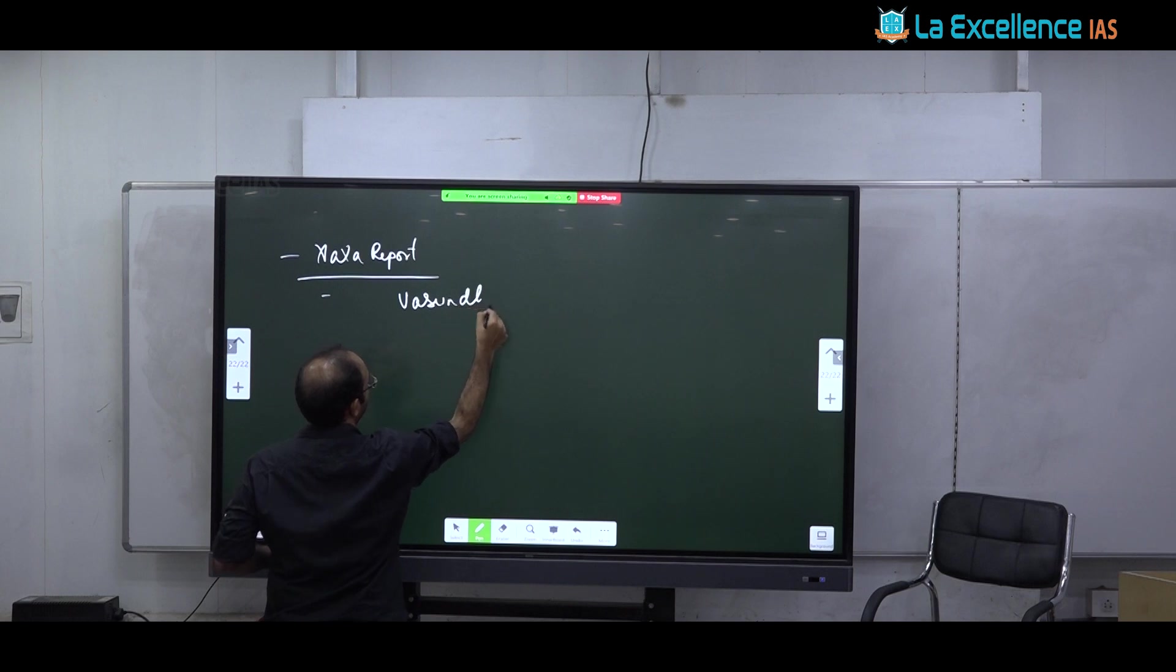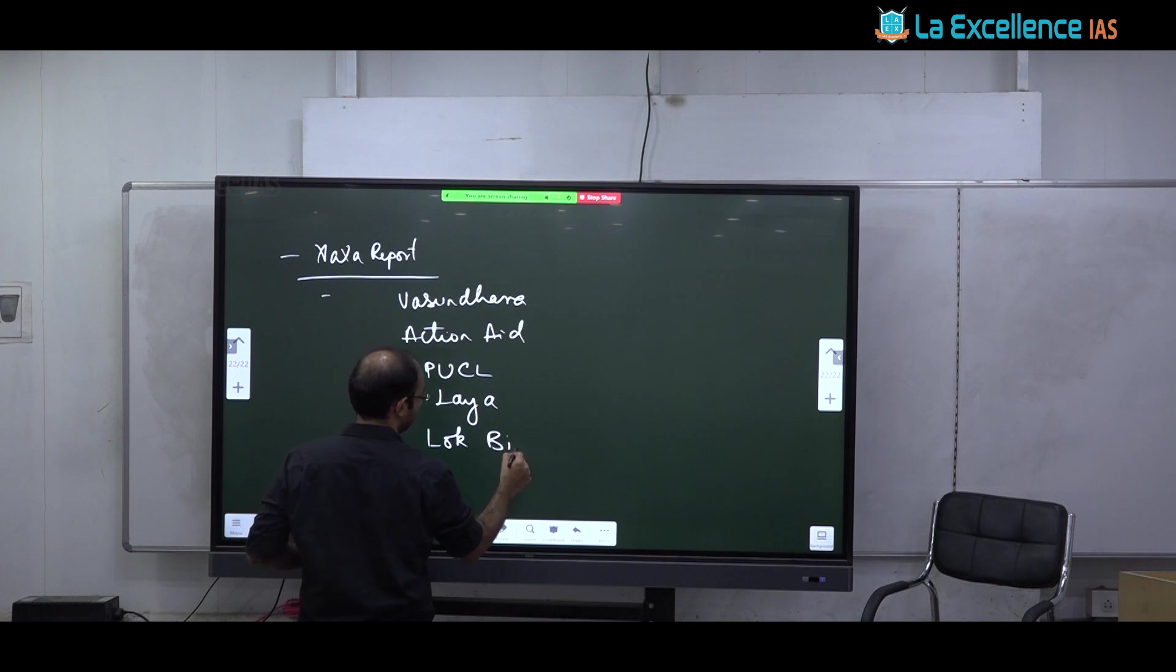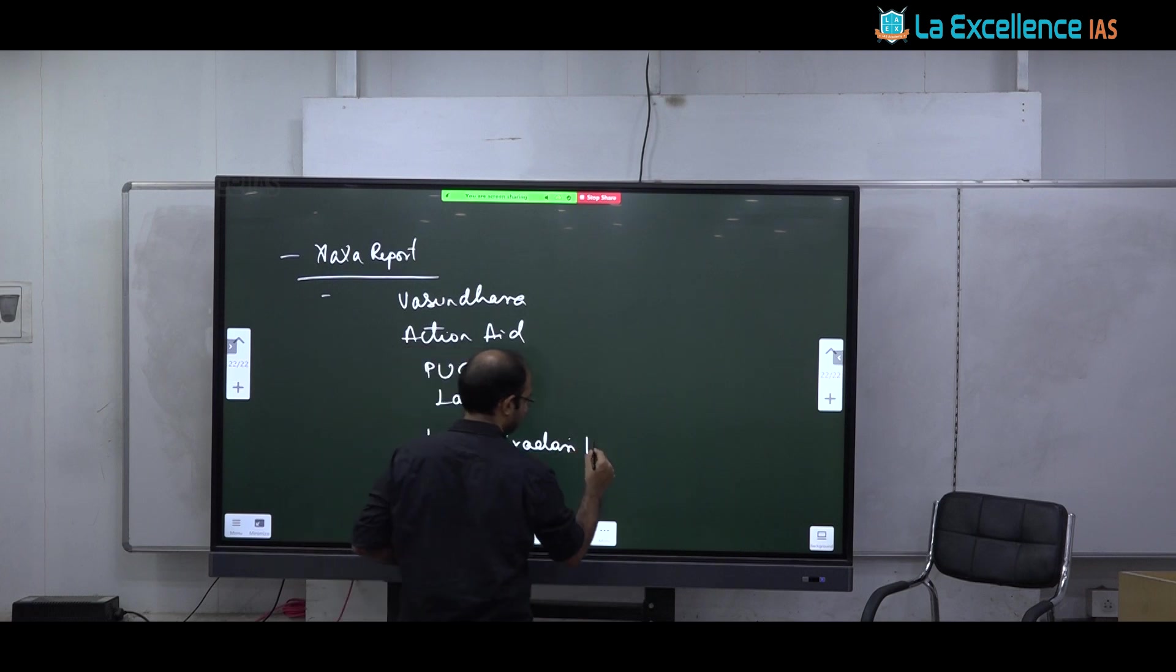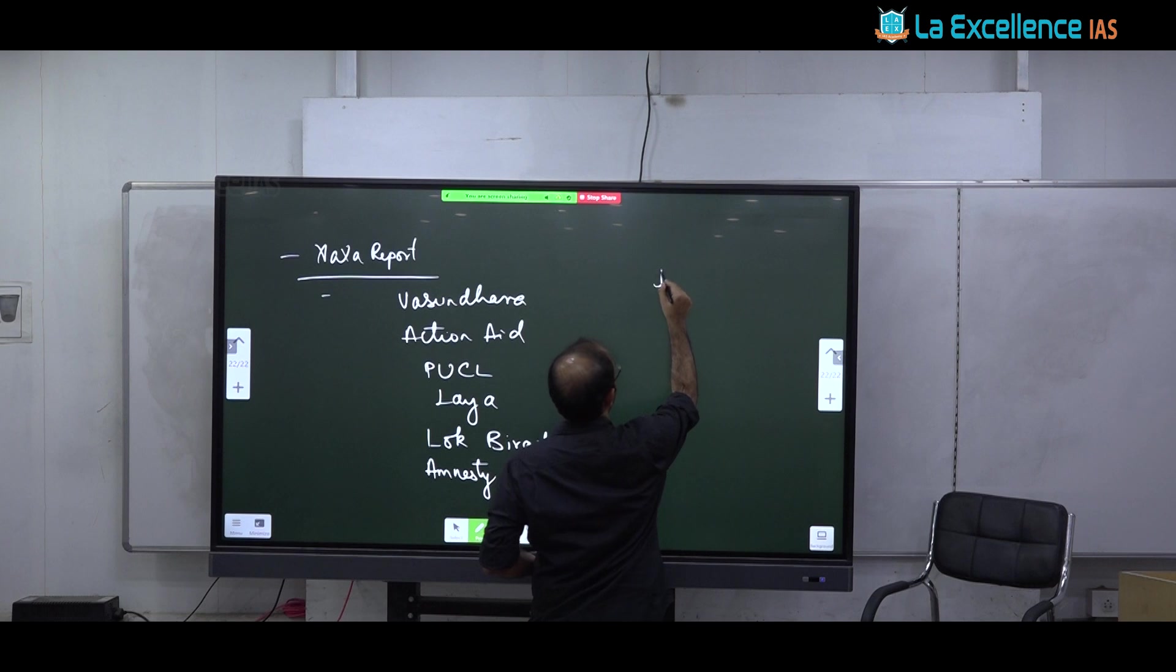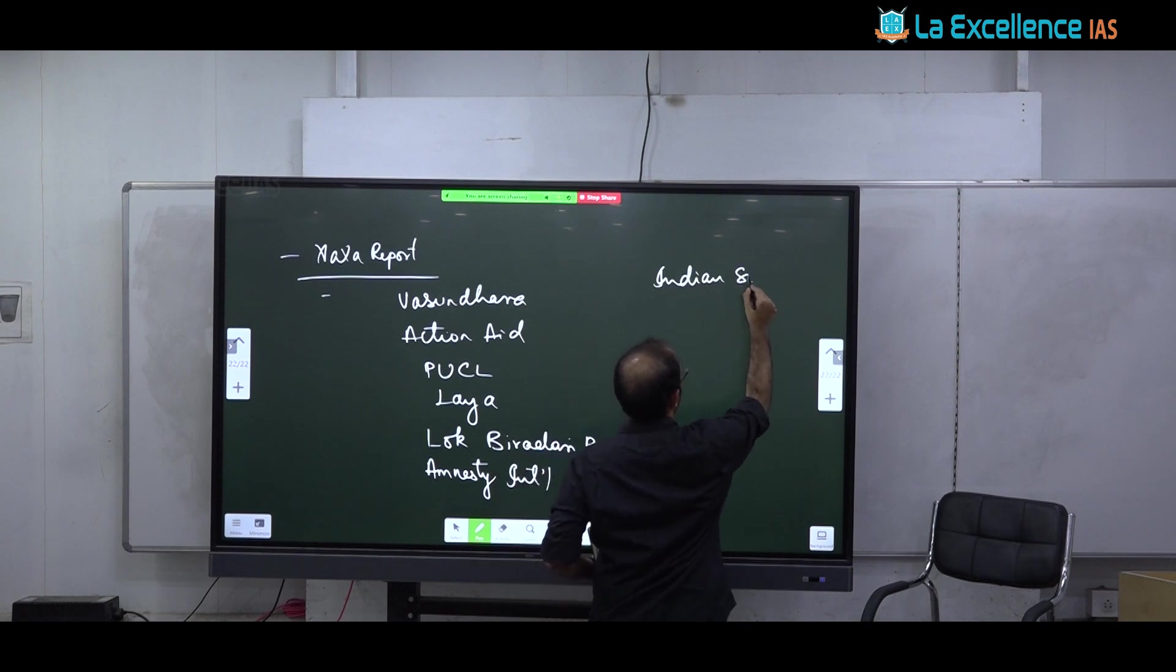I posted an article in the group where various important NGOs names are discussed. You will also get some important NGOs names from Kaka report. If you do not know names of NGOs, NGO examples must be given. One famous NGO is Vasundara. This Vasundara is based out of AP and Hyderabad working for tribal people. There is Action Aid. There is PUCL. There is Laya. There is Lok Biradhari Prakalp. It is being run by Prakash Amte son of Baba Amte to promote tribal health.